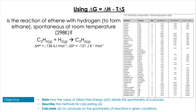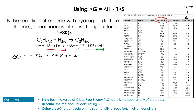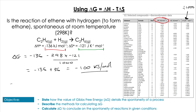Let's look first at the direct method. Here we have the reaction of ethene with hydrogen to form ethane. We're not going to use the Gibbs formation values from the table; instead we just plug in the values the question gives us: ΔH = −136, T = 298, and ΔS = −121. We've got to remember entropy is in joules per kelvin per mole, so we divide that term by 1000. Resolving gives −136 plus 36, which equals −100 kilojoules per mole — a negative value indicating the reaction is spontaneous.